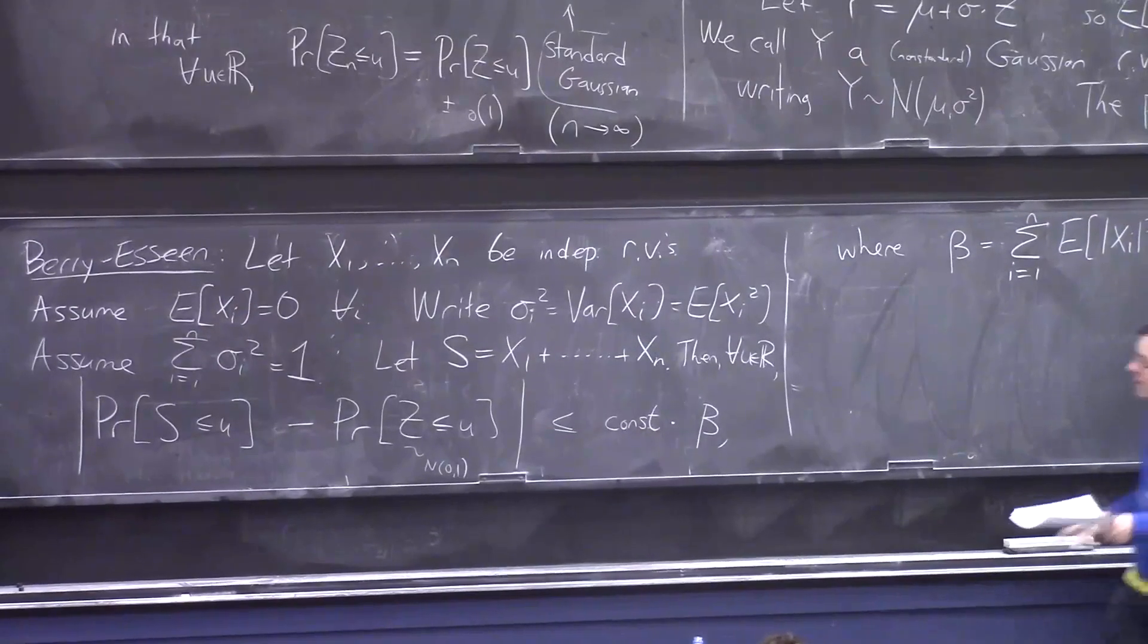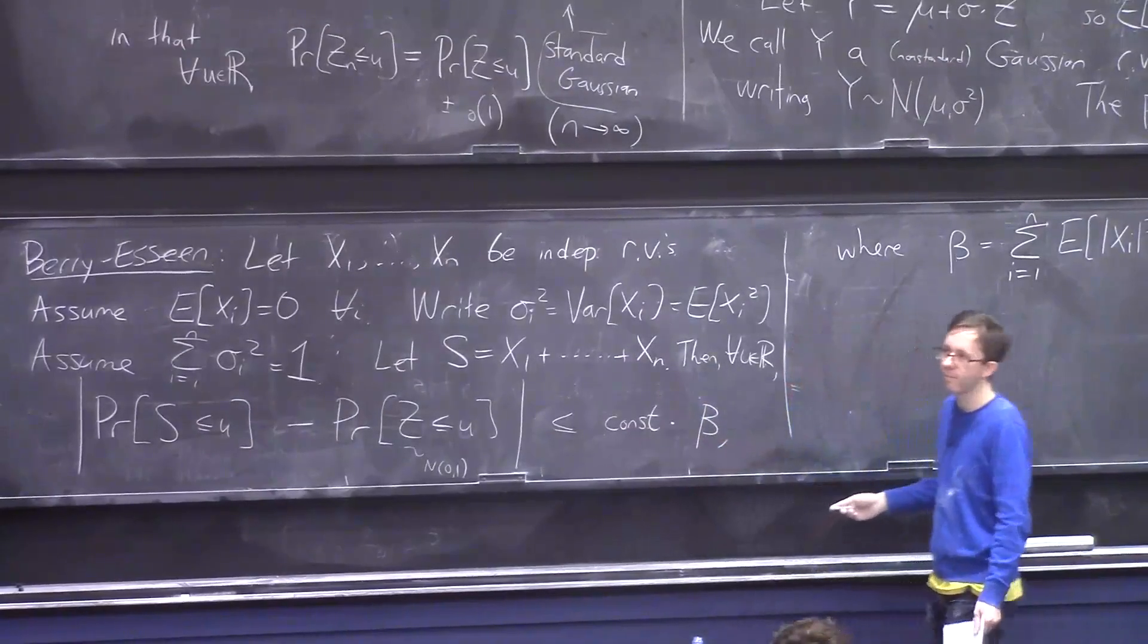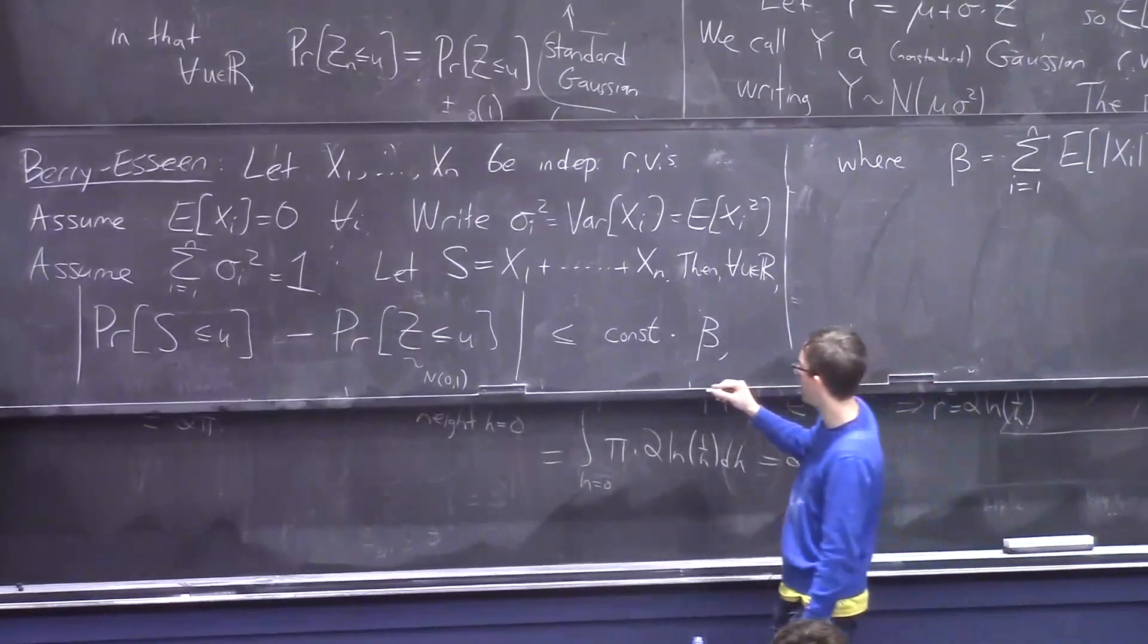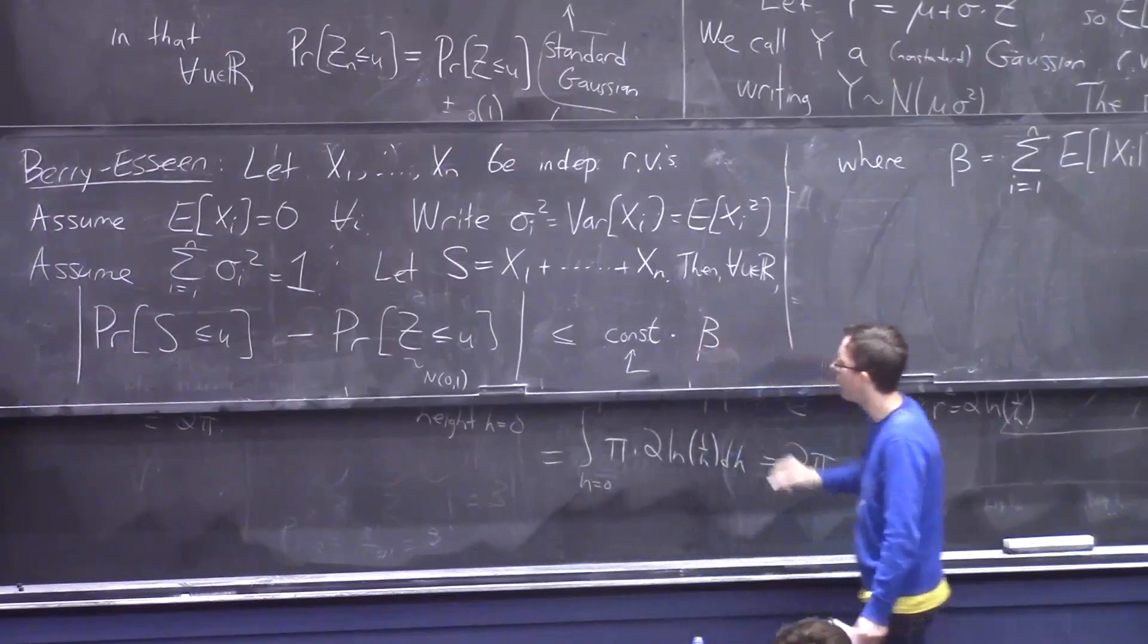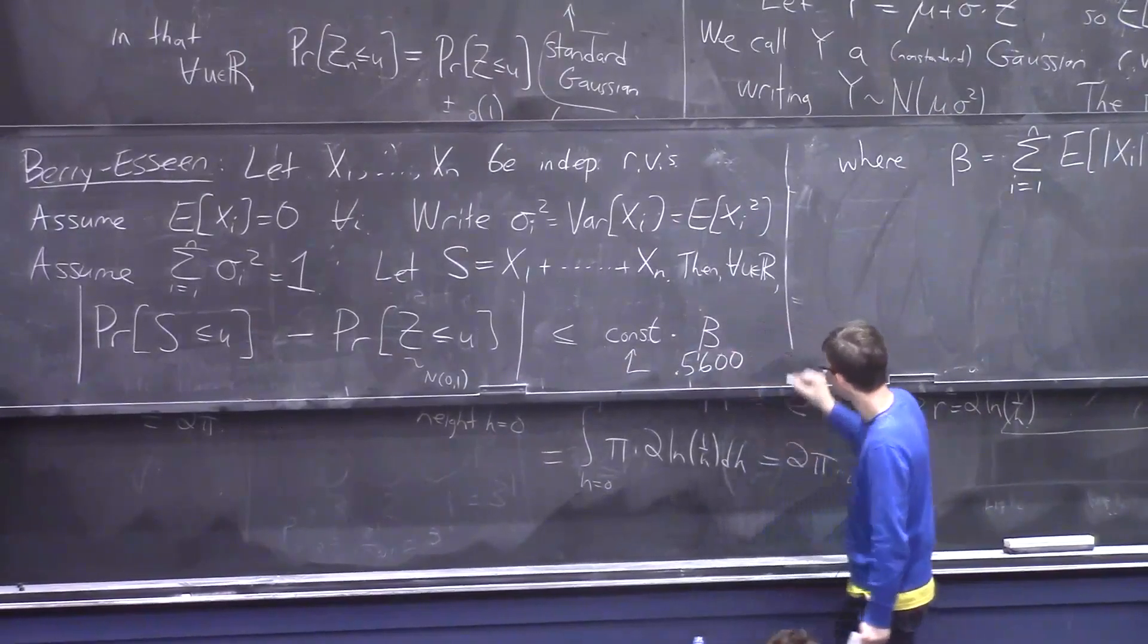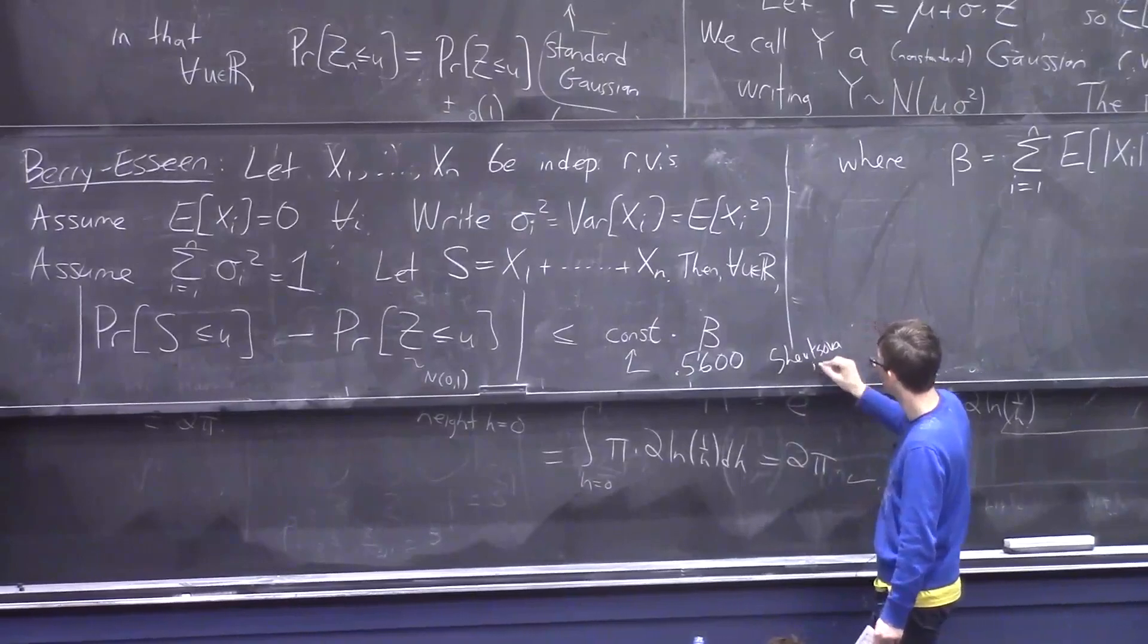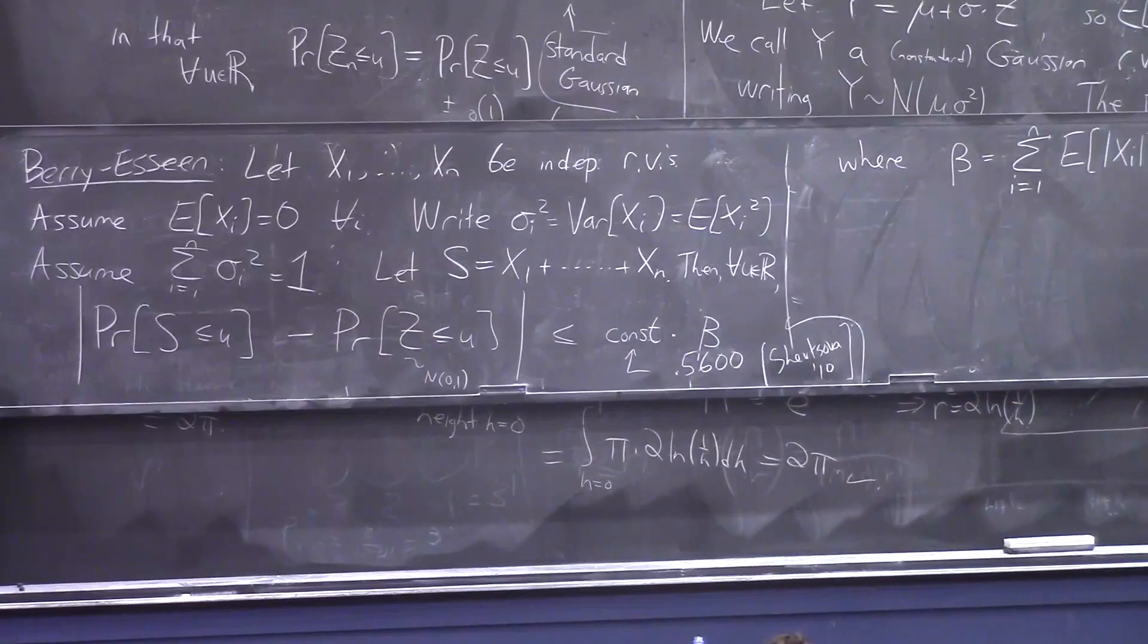And this constant, it depends on who proved it. Barry and Esseen, I don't know, it had some constant that was, like, 7 or 10. And then there's some error in their calculation, which made it worse. But the ultimate champion of this constant game is Irina Shevtsova. And she got it to be 0.5600 in 2010. This is not important, but I just say it for amusement's sake. Okay. So, it's a small constant times this β.